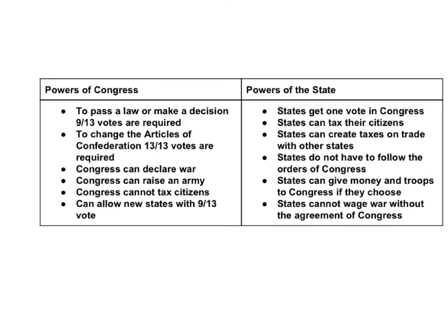I also talk about the powers they have as an individual state, and many of these come up in their descriptions as they read about their state. I make sure to specify that they cannot wage war with anyone without an agreement from Congress, which would take 9 out of 13 votes, and that they have the ability to give money and troops to Congress if they choose, but they don't have to. And that they have the right to tax their citizens.